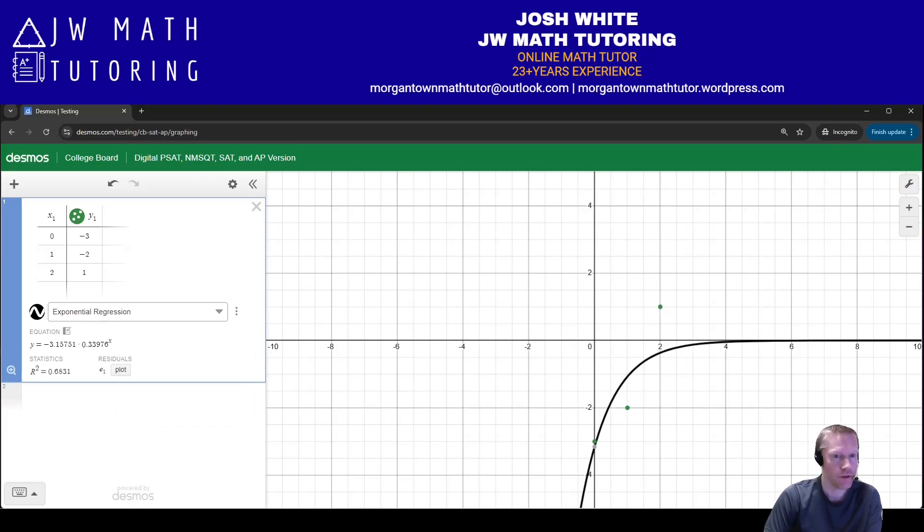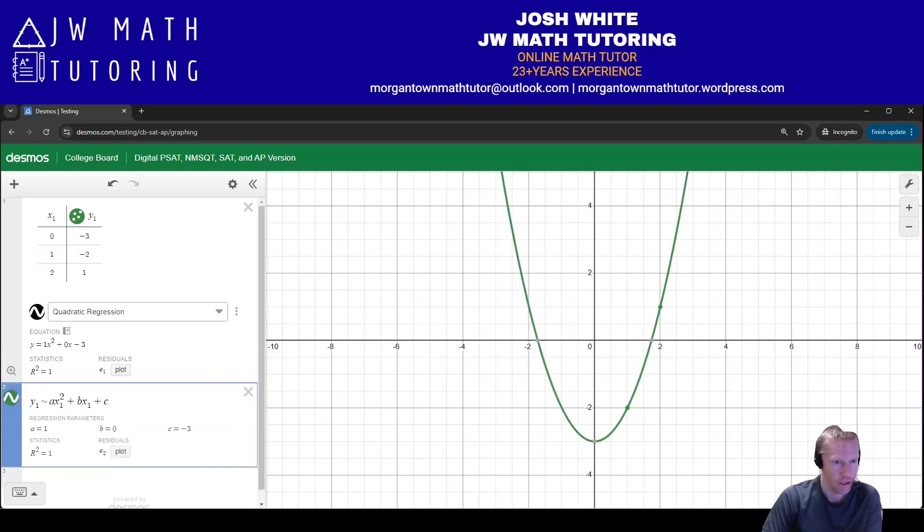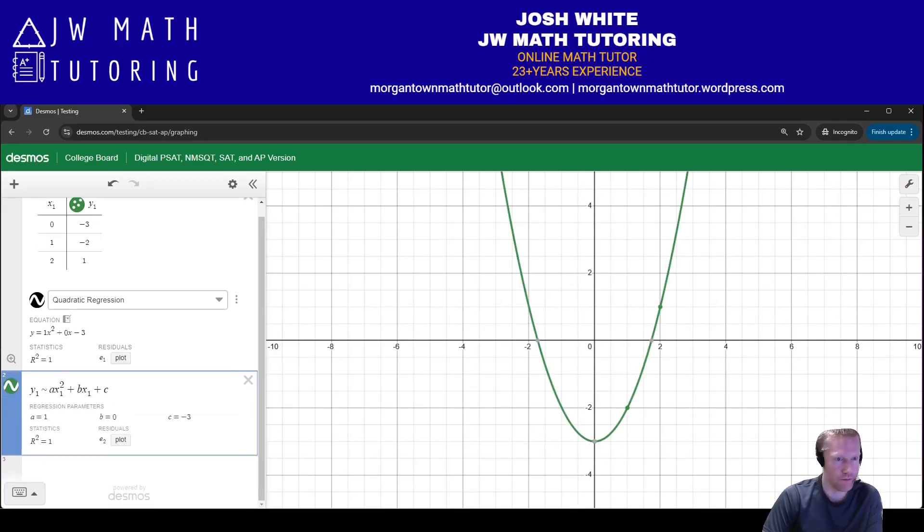So a couple of things, first of all, if you want the exact specific values for the constants, for the a, or for the b, or for the c, or for the whatever, what you would do is you would click these three dots and then go to export custom regression. Now, you can actually, first of all, you'll actually see a and b and c, but also now you can use them as stored values.